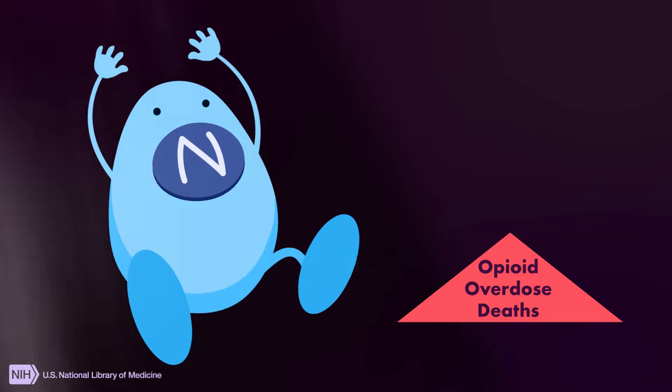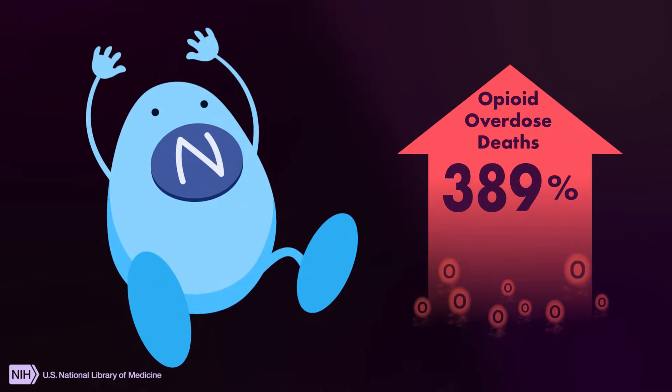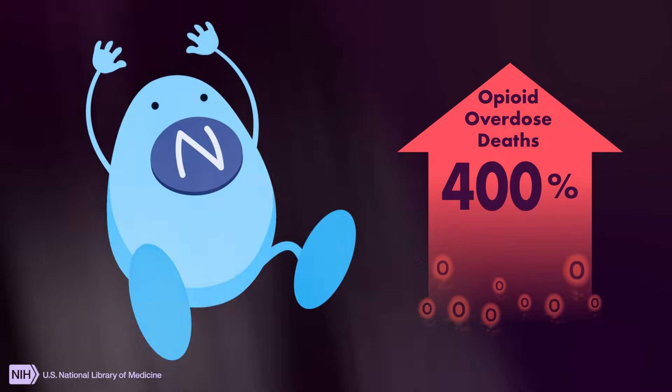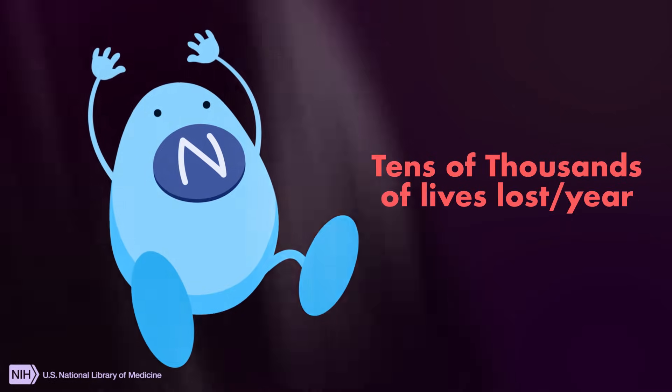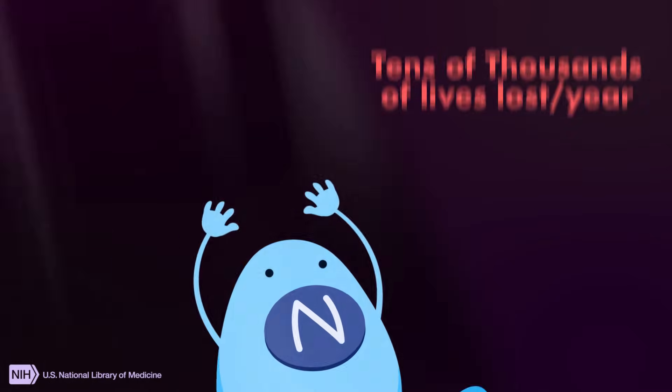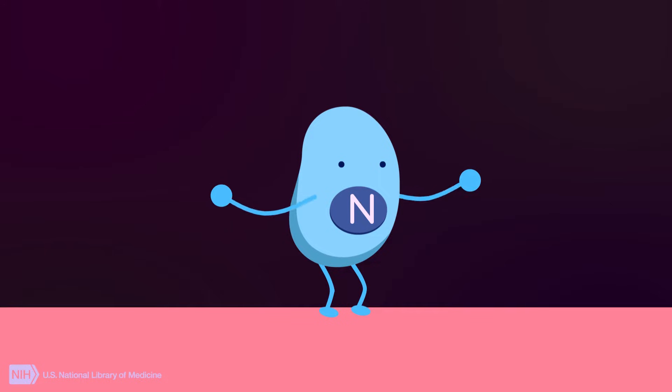The number of opioid overdose deaths has escalated more than 400% since the turn of the century, with tens of thousands of lives now being lost every year. But many deaths can be prevented with a life-saving treatment, naloxone.